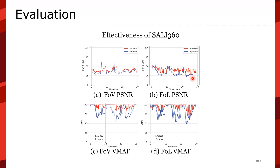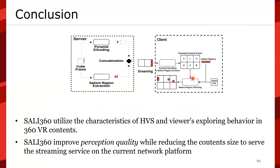Is SALI360 effective? Comparing FOV and foveal region using both PSNR and VMAF — Netflix's quality of experience metric — the gap between the red and blue lines is the improvement. SALI360 maintains about 20 dB improvement in PSNR and about 25 score improvement in VMAF. In conclusion, SALI360 utilizes characterization of the human visual system and viewers' exploring behavior in 360 VR contents, and improves perception quality while reducing content size to serve a streaming service on current network platforms. Thanks for listening.